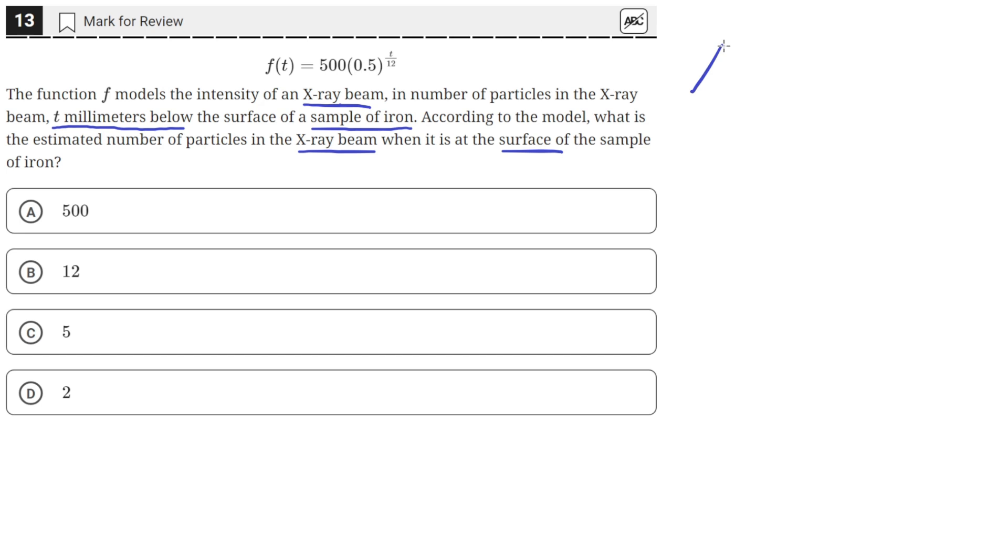So we have this kind of surface made of iron. And this model tells us the intensity of the x-ray beam in number of particles as we go down away from the surface of the iron.